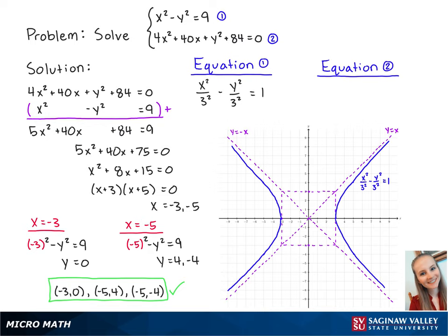The standard form for the second equation is x plus 5 squared over 2 squared plus y squared over 4 squared equals 1. This ellipse has a center at negative 5, 0, with a horizontal minor axis of 2 and a vertical major axis of 4. Using this, we'll get a graph that looks like this.